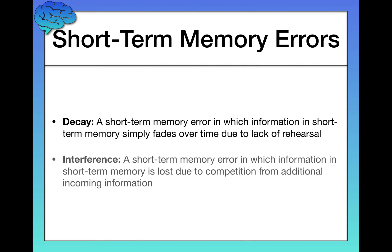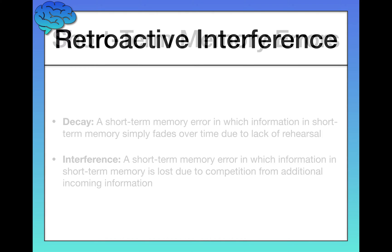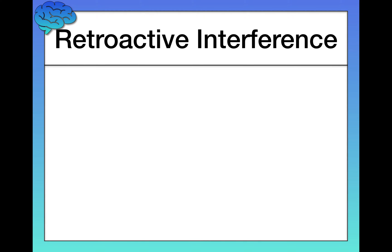The next type of short-term memory error is called interference, and this also happens all the time. This is when information in short-term memory is lost due to competition from additional incoming information — some other information interfering with your ability to remember what's currently there. There are two main types of interference.